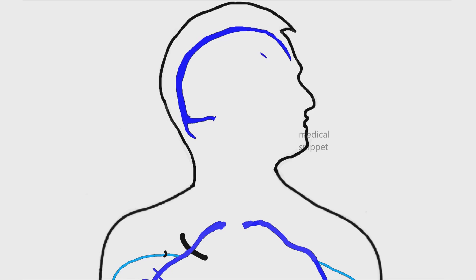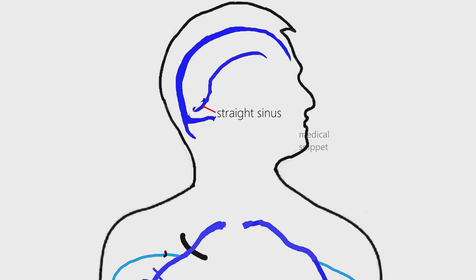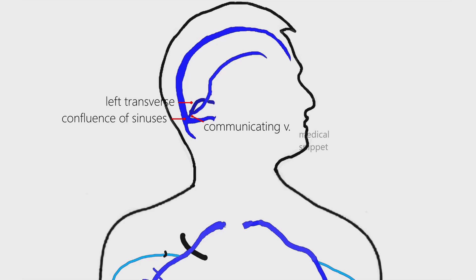The inferior sagittal sinus collects blood from the medial surface of the cerebrum and falx cerebrae, and empties into the straight sinus. The straight sinus passes backward and downward, and terminates usually into the left transverse sinus. The left transverse sinus is connected to the confluence of sinuses via a communicating vein. One of the tributaries of the straight sinus is the great cerebral vein of Galen.